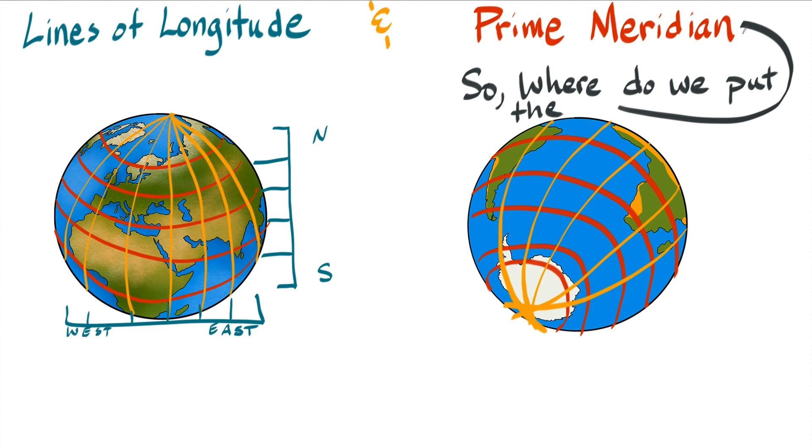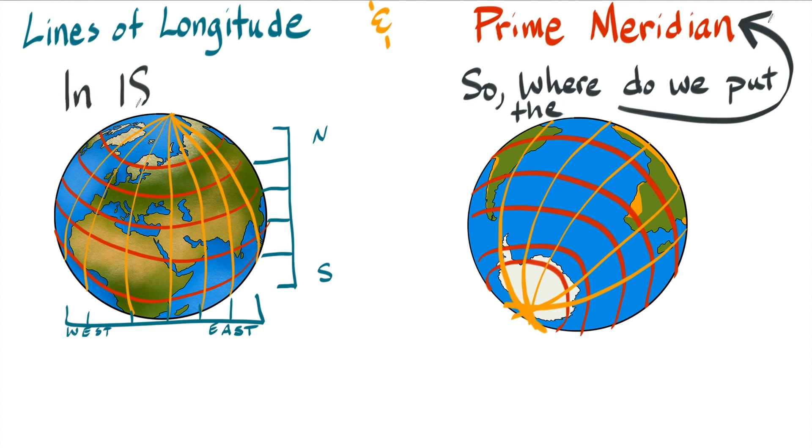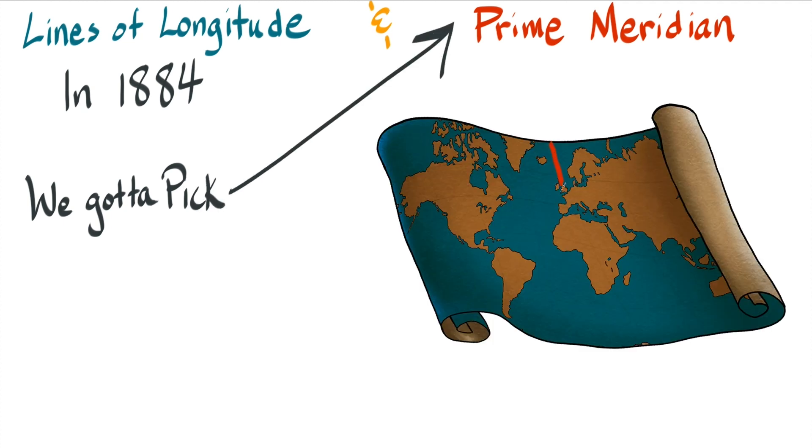In 1884, 22 countries held the International Meridian Conference in Washington, D.C., where they voted to pick the main meridian. They chose for it to go through Greenwich, England. Today we call this the Prime Meridian.